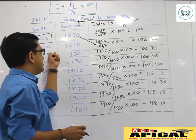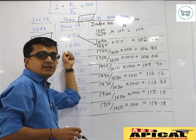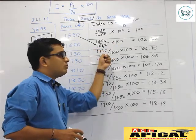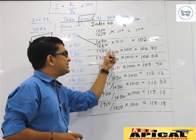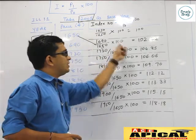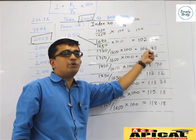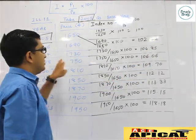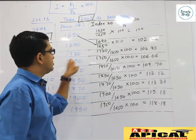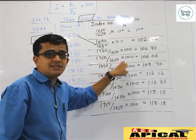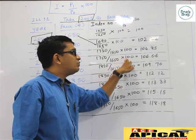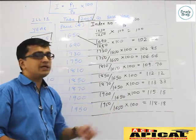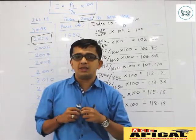For the year 2007, the current year P1 is 1730. So 1730 upon the base year value 1650 into 100 gives you 104.85. For the year 2008, P1 is 1750 upon base year 1650 into 100, which gives you 106.85. And so on, you can calculate for the remaining years.